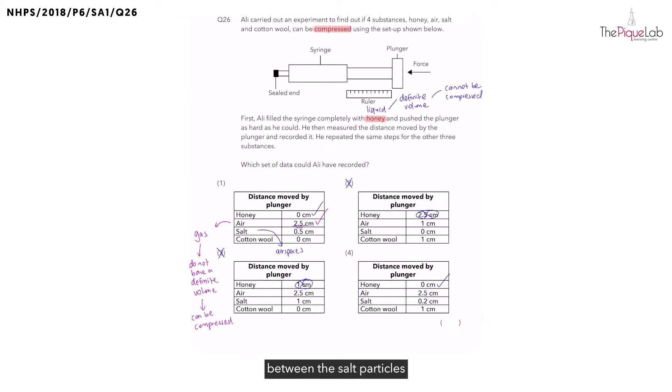Now, since we know that there are air spaces between the salt particles, and we all know air is in the gaseous state, this means that can the air spaces be compressed? Yes, it can. Which means the distance moved by the plunger, would it be 0 or more than 0? The distance moved by the plunger should be more than 0, which is actually seen in the table. So, option 1 is still possible.